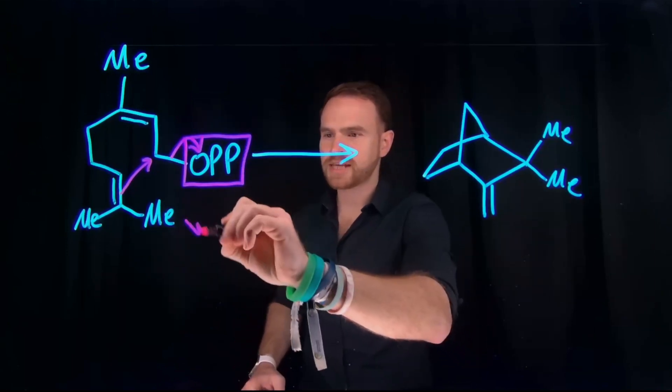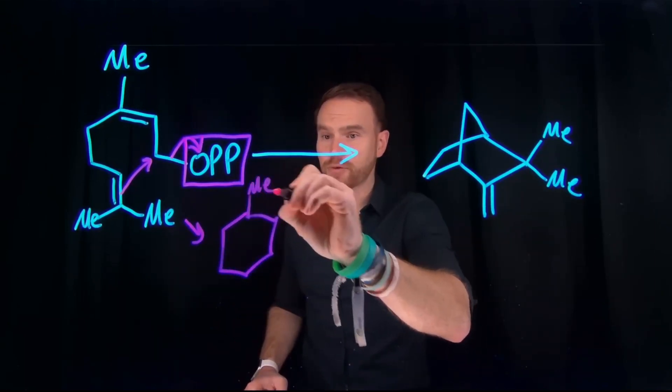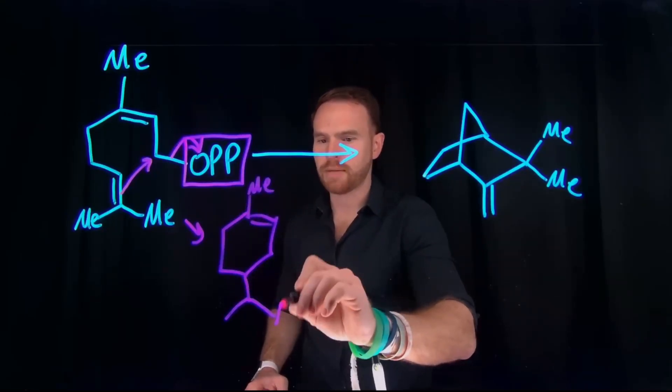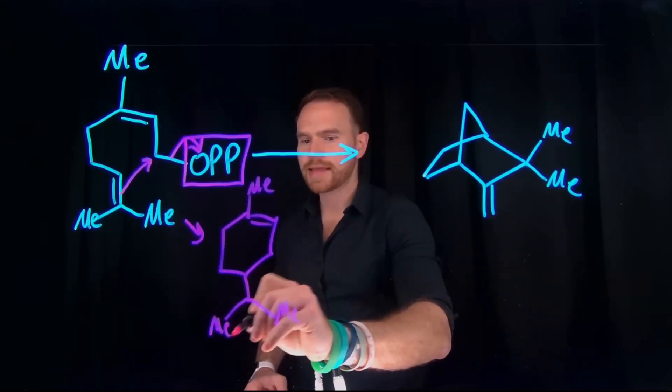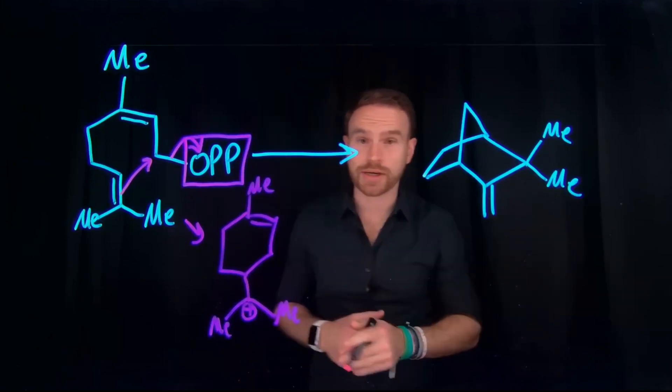So the product of that first step is going to be our new six-membered ring that still contains the methyl group up here with the alkene attached to it. And down here, we've generated a brand new carbocation that is stabilized through hyperconjugation, because it is attached to these three different alkyl groups.